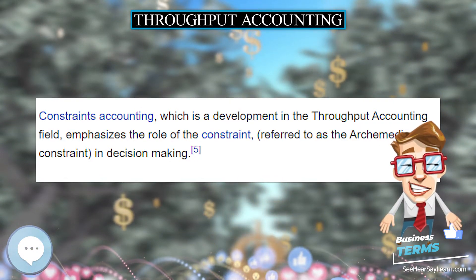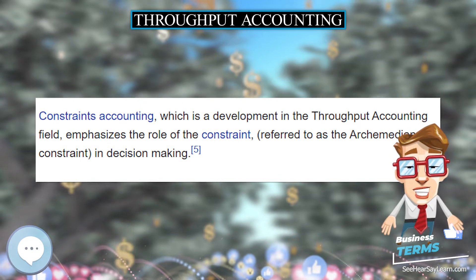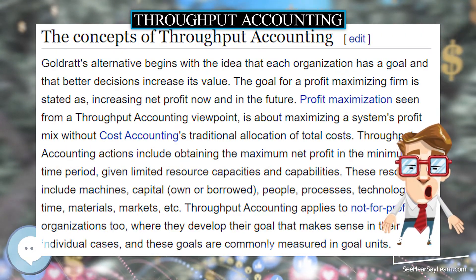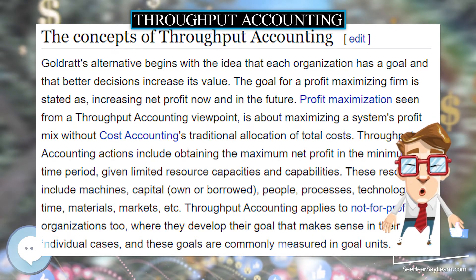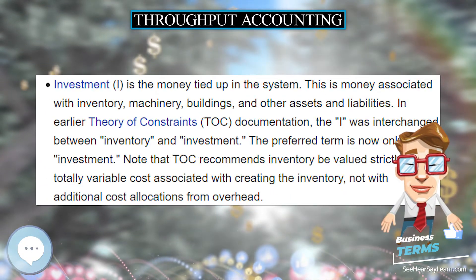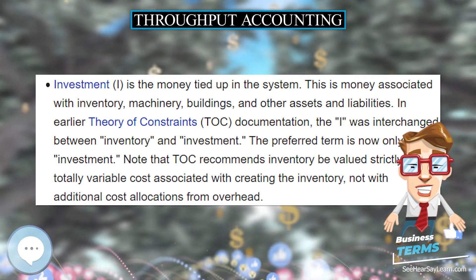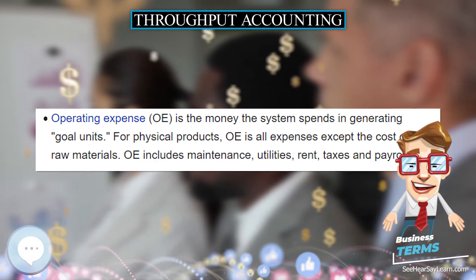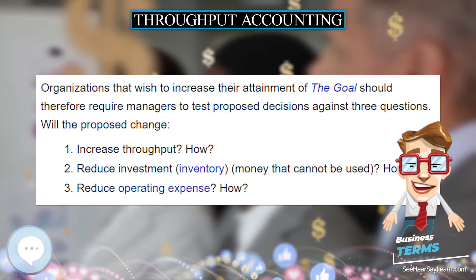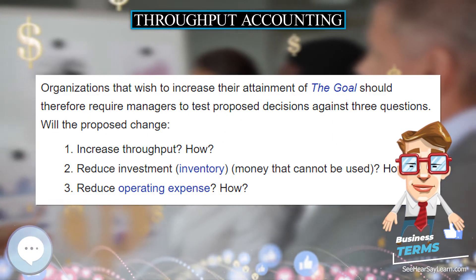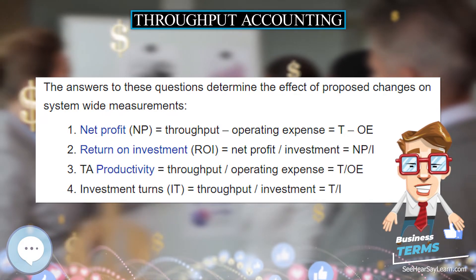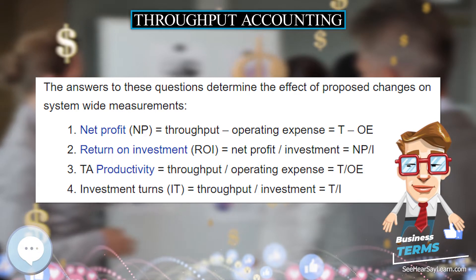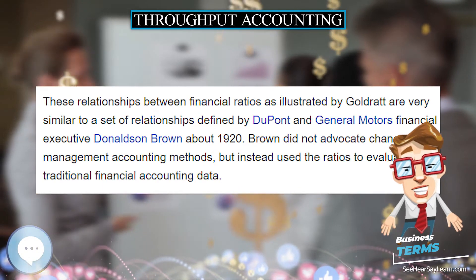Goldratt's alternative begins with the idea that each organization has a goal and that better decisions increase its value. The goal for a profit-maximizing firm is stated as increasing net profit now and in the future. Profit maximization seen from a throughput accounting viewpoint is about maximizing a system's profit mix without cost accounting's traditional allocation of total costs. Throughput accounting actions include obtaining the maximum net profit in the minimum time period, given limited resource capacities and capabilities.